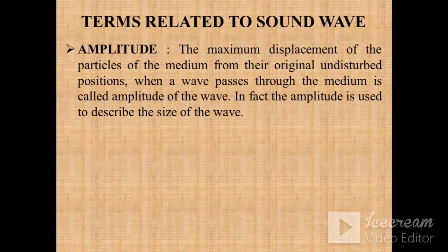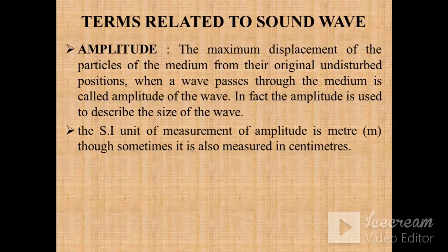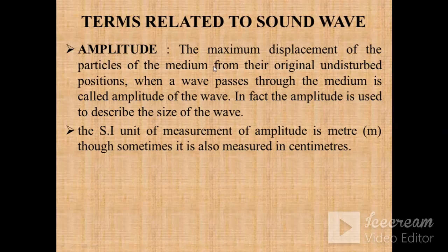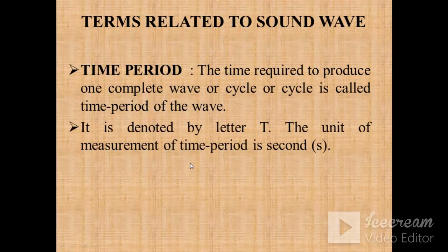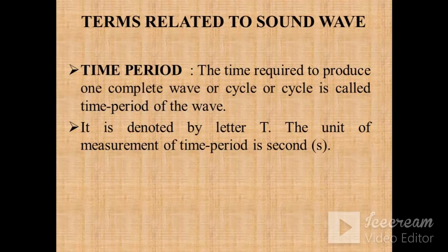A few terms related to sound waves. First is amplitude — amplitude is the maximum displacement of the particles of the medium from their original undisturbed positions when a wave passes through the medium. Amplitude describes the size of the wave. Since it is a displacement of particles, its SI unit is meter, and sometimes centimeters. Next is time period — time period is the time required to produce one complete wave or cycle, denoted by the letter T, and its SI unit is second.